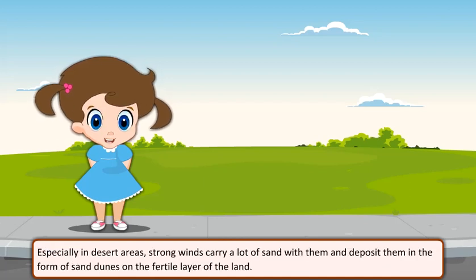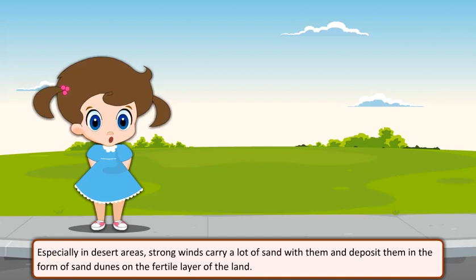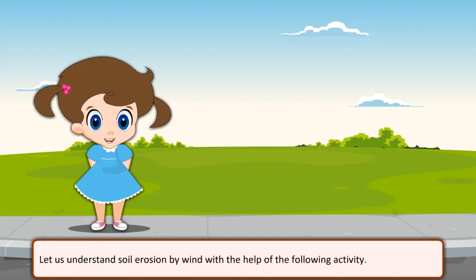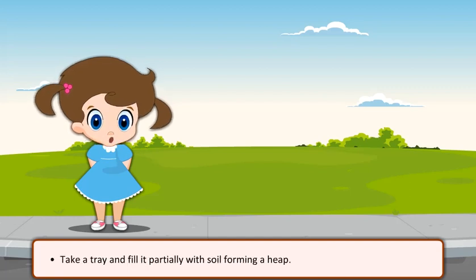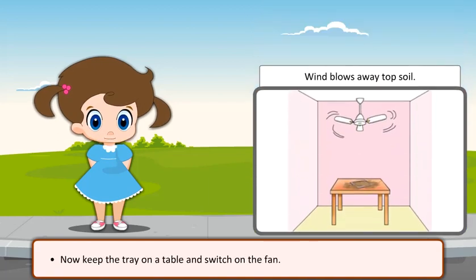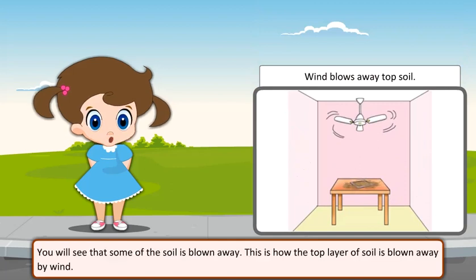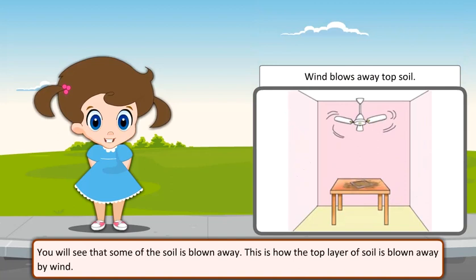Especially in desert areas, strong winds carry a lot of sand with them and deposit them in the form of sand dunes on the fertile layer of the land. To understand soil erosion by wind, take a tray and fill it partially with soil forming a heap. Keep the tray on a table and switch on the fan. You will see that some of the soil is blown away. This is how the top layer of soil is blown away by wind.